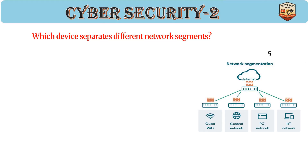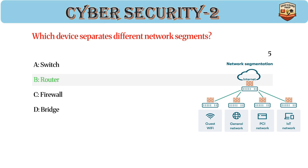Which device separates different network segments? Answer: B. Router. Routers connect multiple networks. They operate at layer 3 (network) of the OSI model. Also provide routing and security functions.